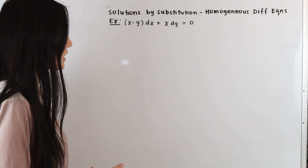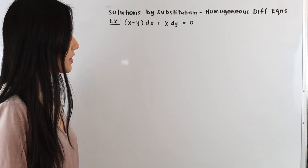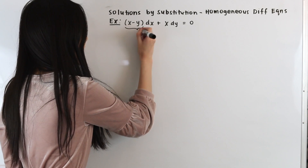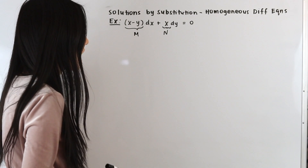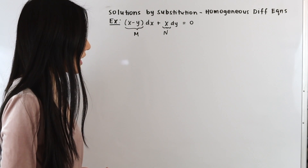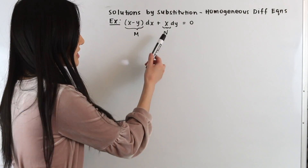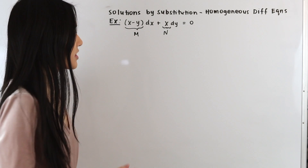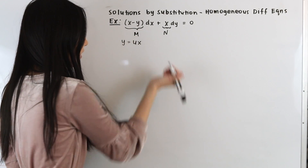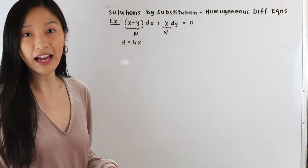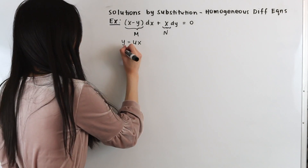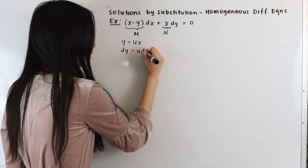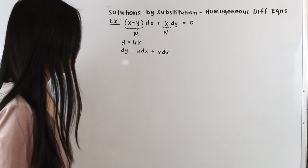In our next example, we have the quantity x minus y dx plus x dy equals zero. We identify M equals x minus y and N equals x. The easier function to integrate is N, so since N is multiplied by dy, our substitution is y equals u times x. We also need to substitute dy using the product rule: dy equals u dx plus x du.